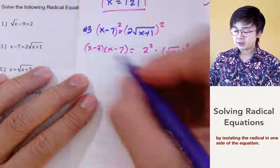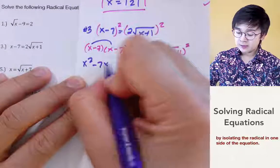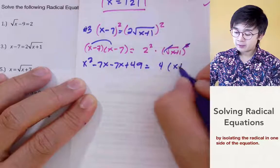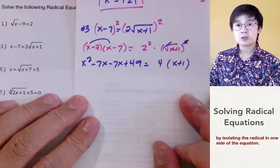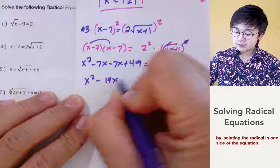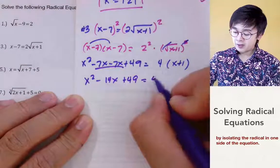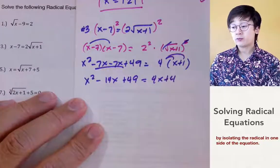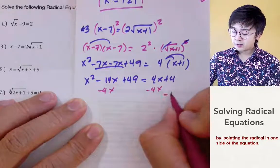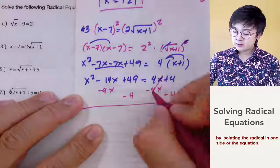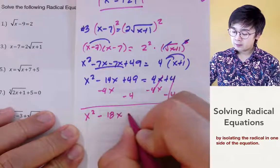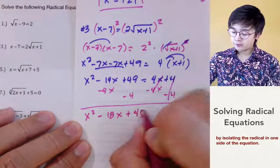We'll expand this out. So x times x is x squared, minus 7x minus 7x plus 49, equal to 4 times x plus 1. Simplifying, we combine like terms: x squared minus 14x plus 49 equals 4x plus 4. Now we equate to 0 by subtracting 4x and 4 from both sides, leaving us with x squared minus 18x plus 45 equal to 0.